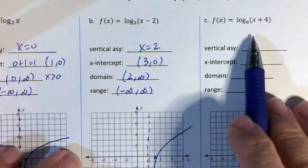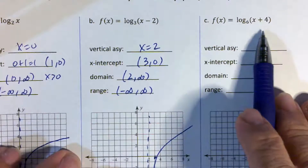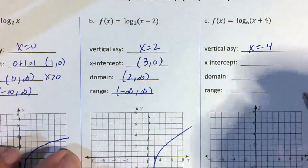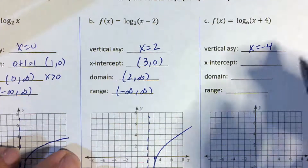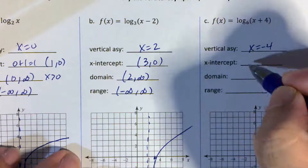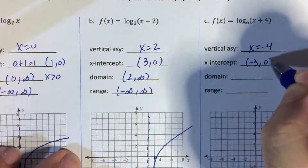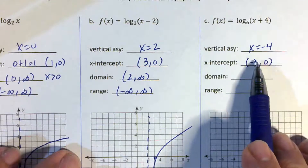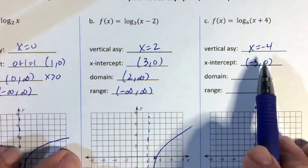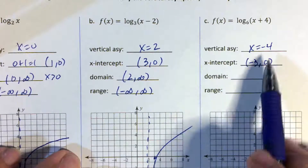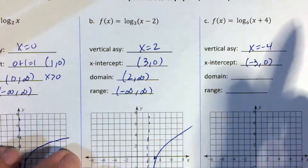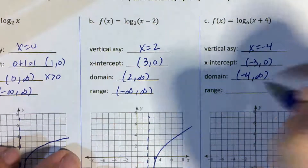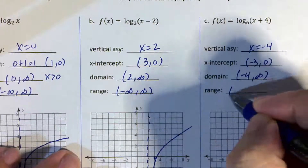Here we have x plus 4, so the vertical asymptote is opposite of that — x equals negative 4. The x-intercept is h plus 1, so it's negative 4 plus 1, which is negative 3 — so the x-intercept is (−3, 0). The domain is restricted and greater than negative 4, so it's negative 4 to infinity. The range is all real numbers again.